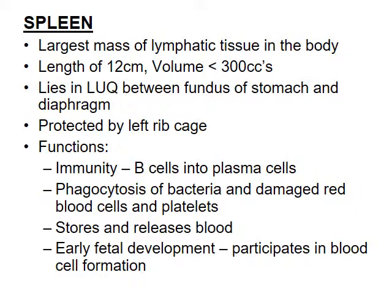The spleen is much smaller than the liver and lies in the left upper quadrant — the balance on the other side to the liver. The rib cage is there to protect it. If ribs are broken in this area, we become very worried about the spleen.